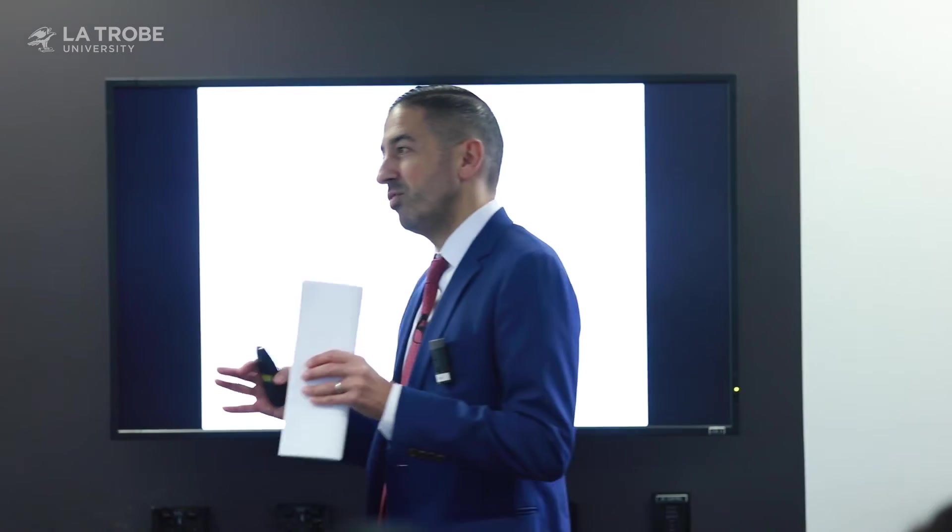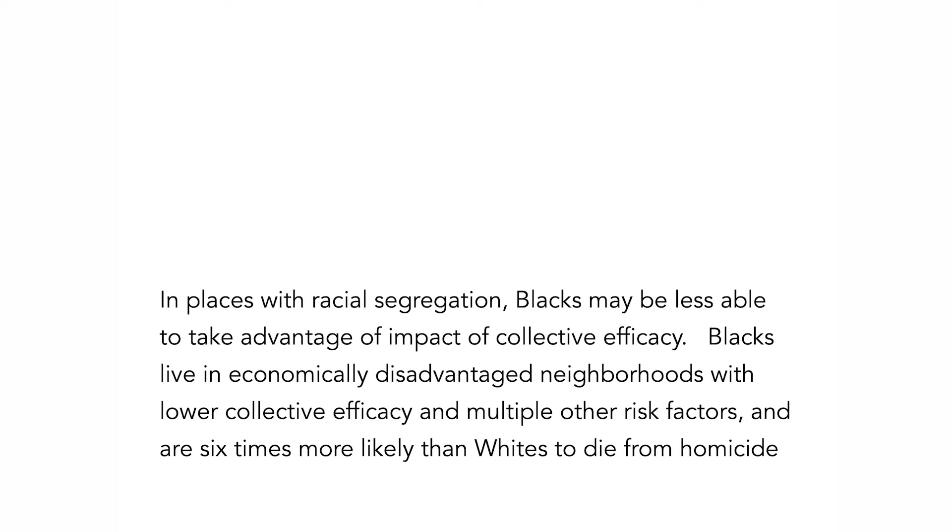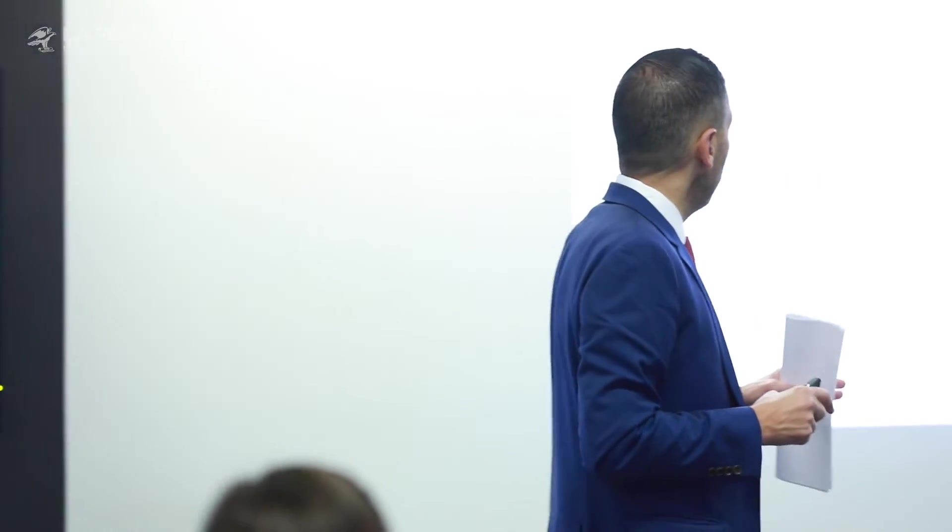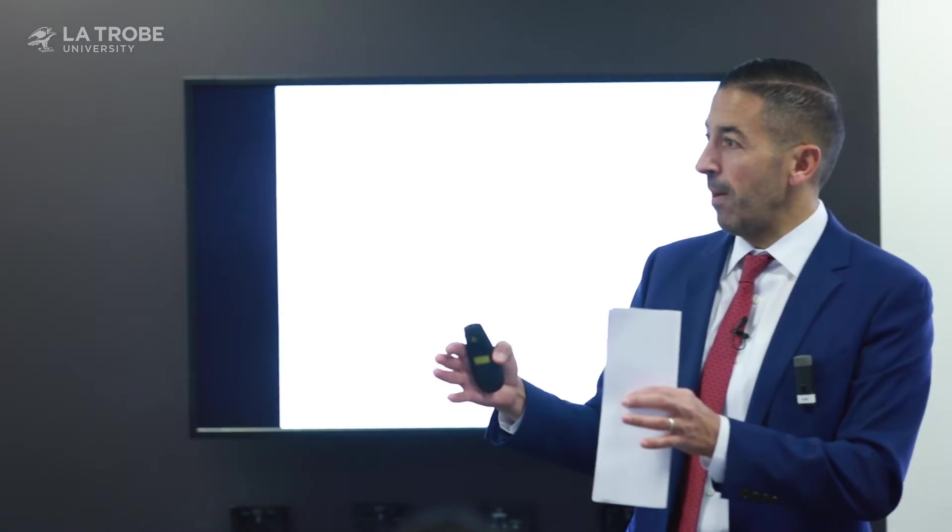But all of this, to my mind, elides the fundamental foundational cause I've been talking about — the separation of different groups. Spatial racial residential segregation underlies many challenges in violence and intergroup violence in the U.S. You have groups kept apart, resulting in intergroup tension and not infrequently violence. In places with racial segregation, it is entirely plausible that Black residents — the disadvantaged minority group — are less able to take advantage of collective efficacy. Blacks who typically live in economically disadvantaged neighborhoods with lower collective efficacy are much more likely to die of homicide than whites.